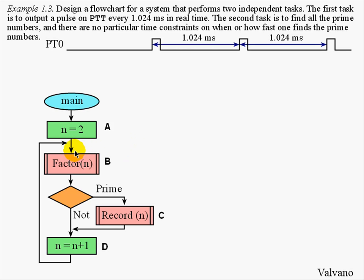The first part of the task will be to factor the integer n, done by a subroutine called factor. We'll pass in the number n, and it will return the factors of that n. If the factors include 1 and n, then the number is prime, and we will record it with a subroutine called record. However, if the factors of n include multiple terms in addition to 1 and n, it is not prime and we will not record it. This is the foreground loop, which will search for and record all the prime numbers.